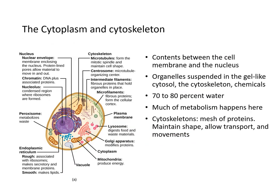The cytoplasm is the entire region inside the cell. It suspends all the cellular organelles — it is the contents between the cell membrane and the nucleus. All organelles are suspended in a gel-like cytosol, along with the cytoskeleton and other chemicals. The cytosol is anywhere from 70% to 80% water, and much of the cell's metabolism happens in the cytoplasm.